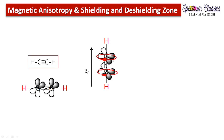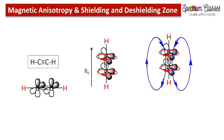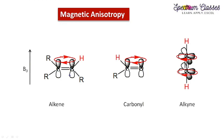If circulation of electrons is taking place, this is the direction of the induced current. If induced current is there, then there are induced magnetic field lines associated with the circulating electrons. The direction of these induced magnetic lines is decided by the right-hand thumb rule. Here we are again having the deshielding zone on the sides and the shielding zone along the axis. Our proton is present in the shielding zone, which is why alkyne protons resonate at a lesser chemical shift value than alkene protons.